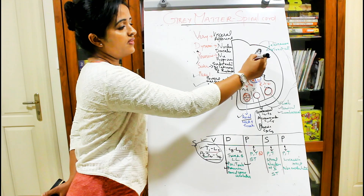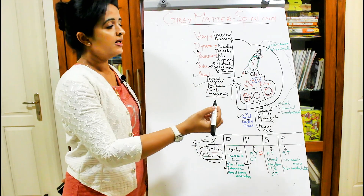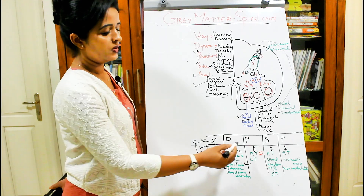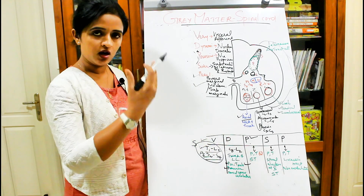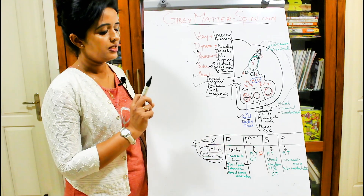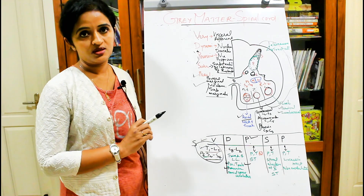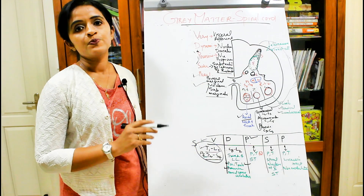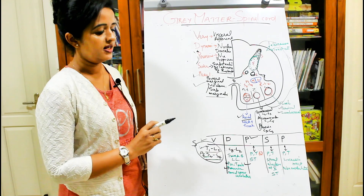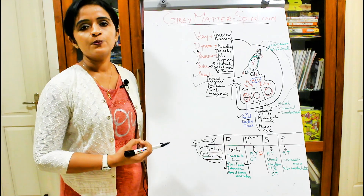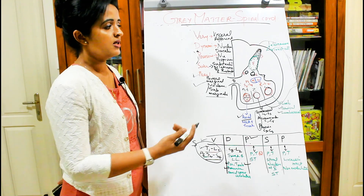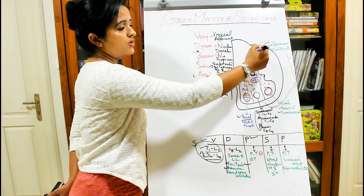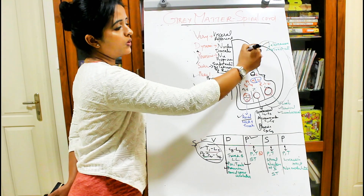The next group is nucleus proprius. As indicated by the dotted black line on the diagram, it is seen throughout the length of the spinal cord. It carries touch and pain sensations. Fibers from the dorsal root relay in the nucleus proprius, which gives a contribution to the formation of the spinothalamic tract.